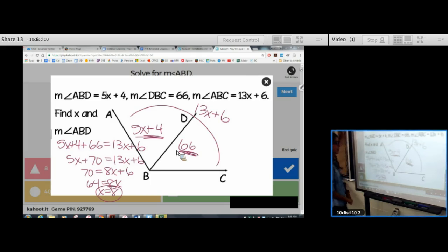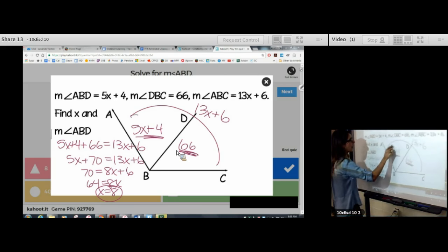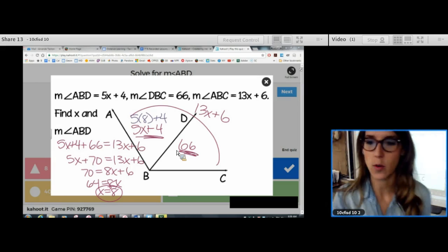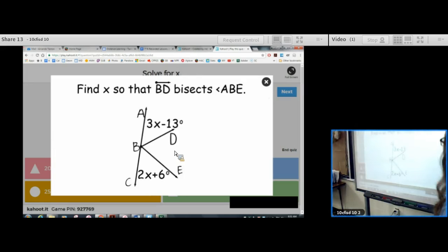Then we plug it back in to find ABD. 5 times 8 plus 4. So, final answer, 44. All right, this one's a little bit different.